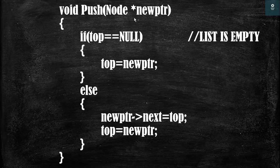Here is the code for inserting an element in a link stack, and this code is very similar to inserting an element at the beginning of a linked list with only one or two modifications. In a linked list we use 'start' as a pointer that stores the address of the first element, but in a link stack we use a pointer named 'top', and top stores the address of the first element of the link stack.